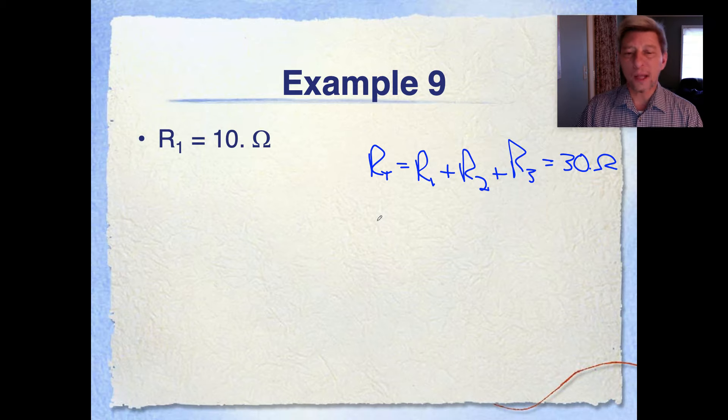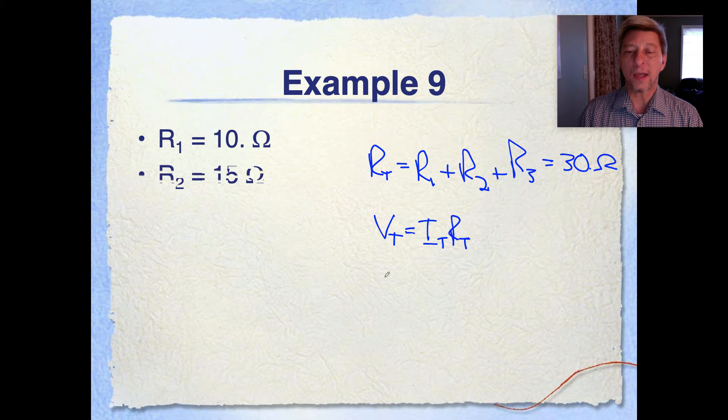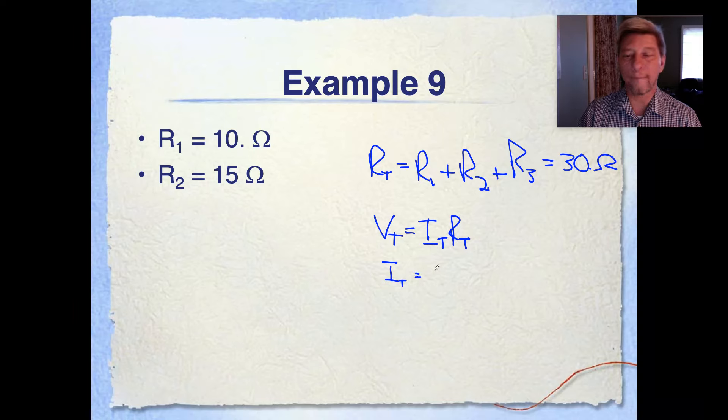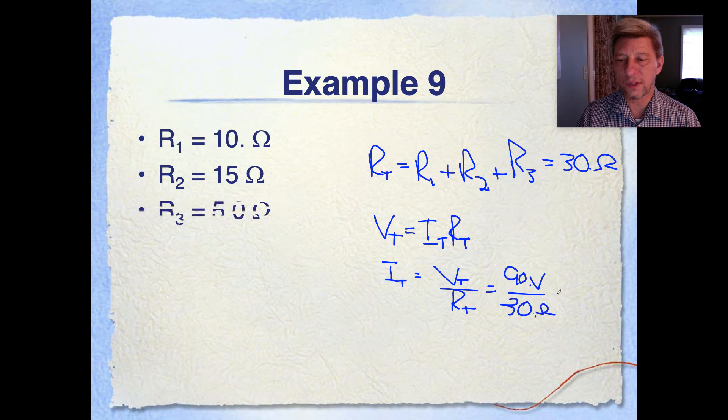Then, as I said, we're going to try to calculate the value of the total current. So using ohms law, Vt is going to equal It times RT. And therefore, It is going to equal the total voltage divided by the total resistance.